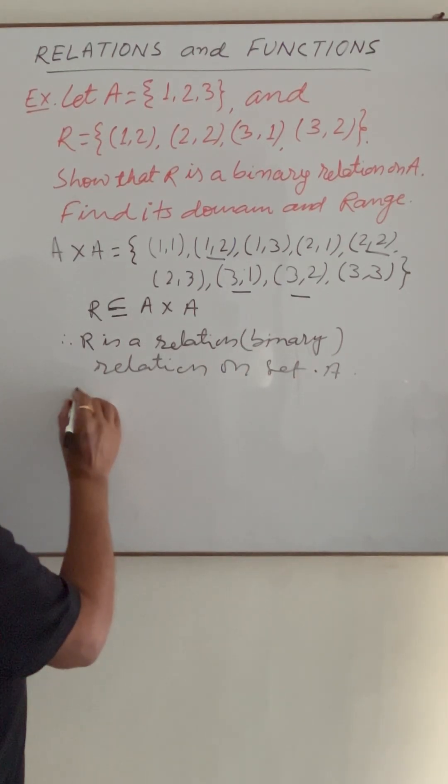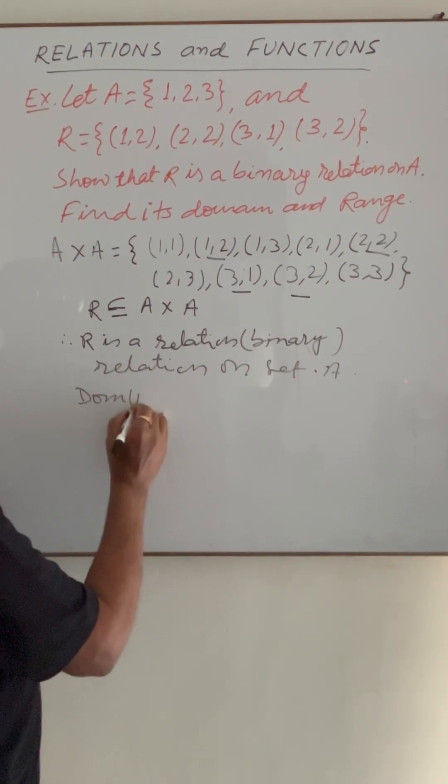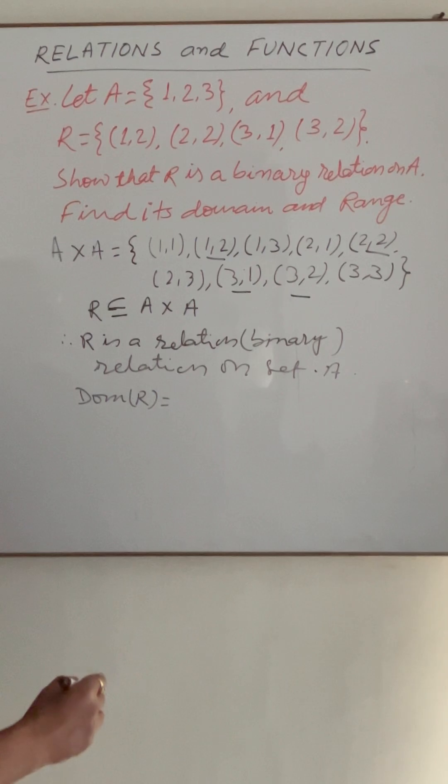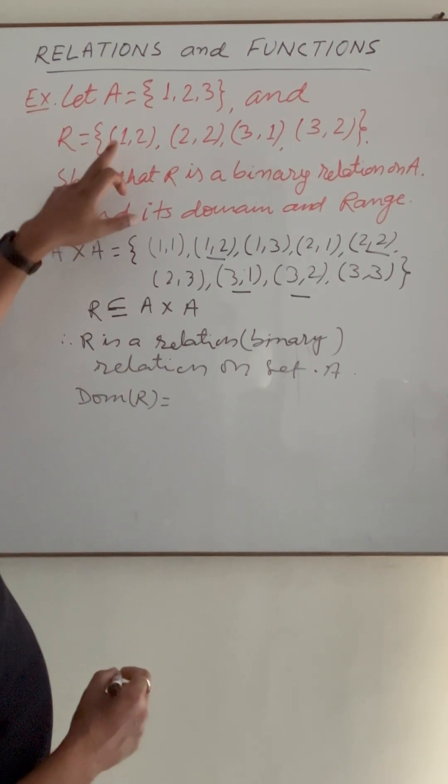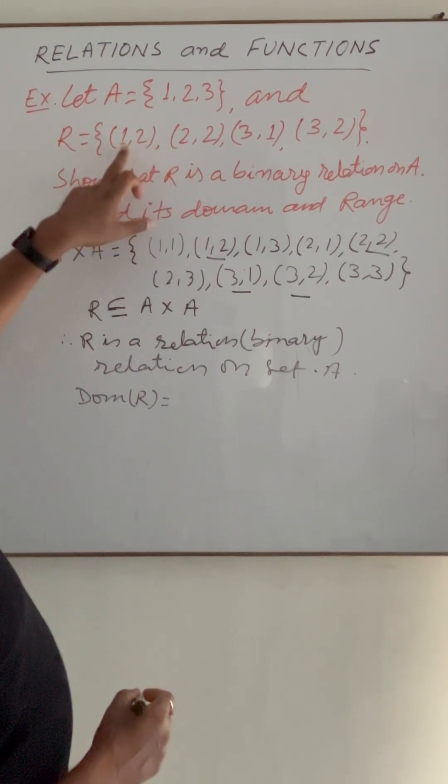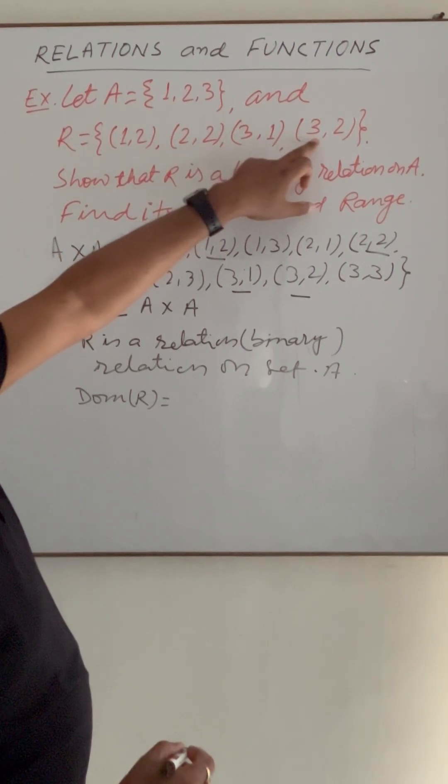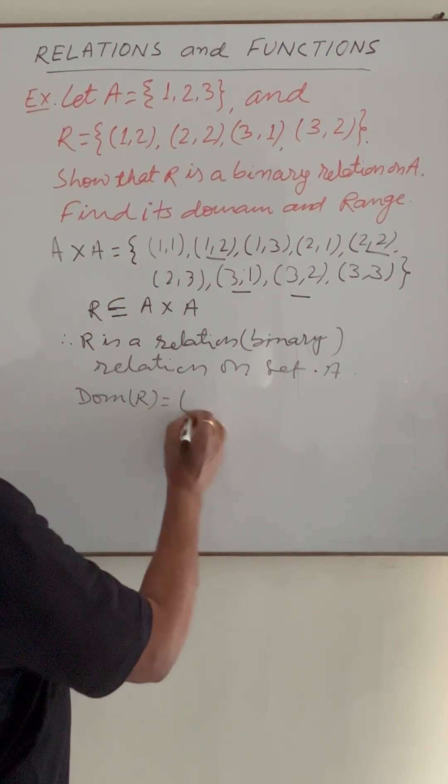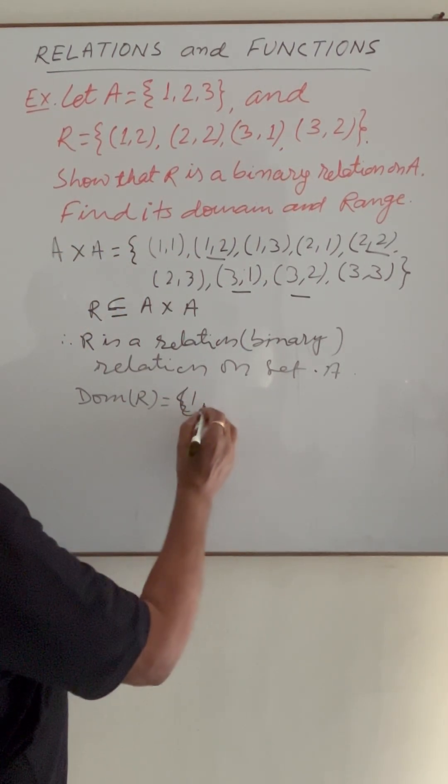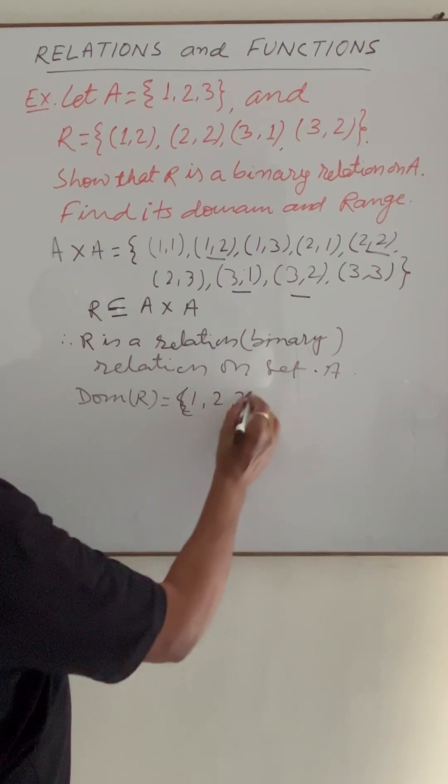Now we have to find domain of this relation. So we'll get a set having first elements 1, 2, 3. That will not be repeated. So domain is a set having elements 1, 2, and 3.